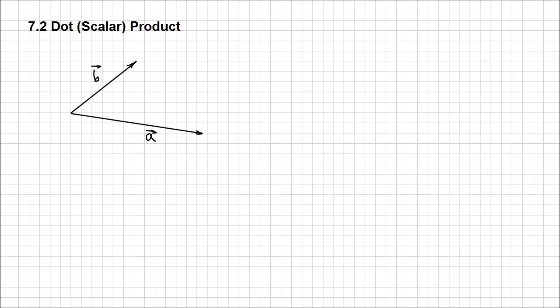Let's look at this diagram where I have two vectors, A and B, and all we know is the angle between these two vectors — let's call that theta. By definition, the dot product of two vectors arranged in this configuration of tail to tail, for which we know the angle between the two vectors, the dot product is going to be equal to the magnitude of one vector times the magnitude of the other vector times the cosine of the angle between them, given the condition for the angle theta to be between 0 and 180 degrees.